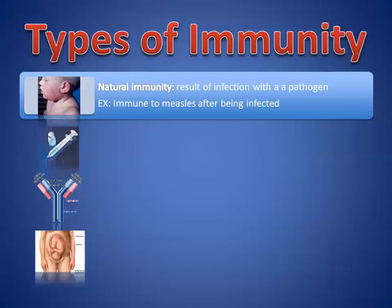Some people say they got chicken pox as a kid but then got it again. Everyone's immune system is different — there's lots of variation, just like with height and skin color. In general, most people infected with things like chicken pox or measles, who survive, usually won't be infected again. That has to do with the buildup of antibodies.